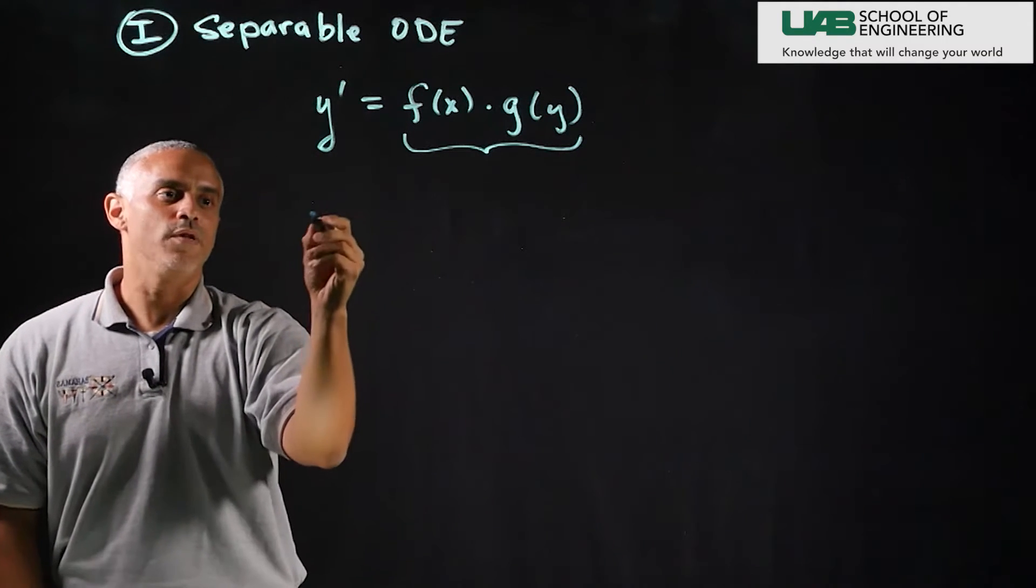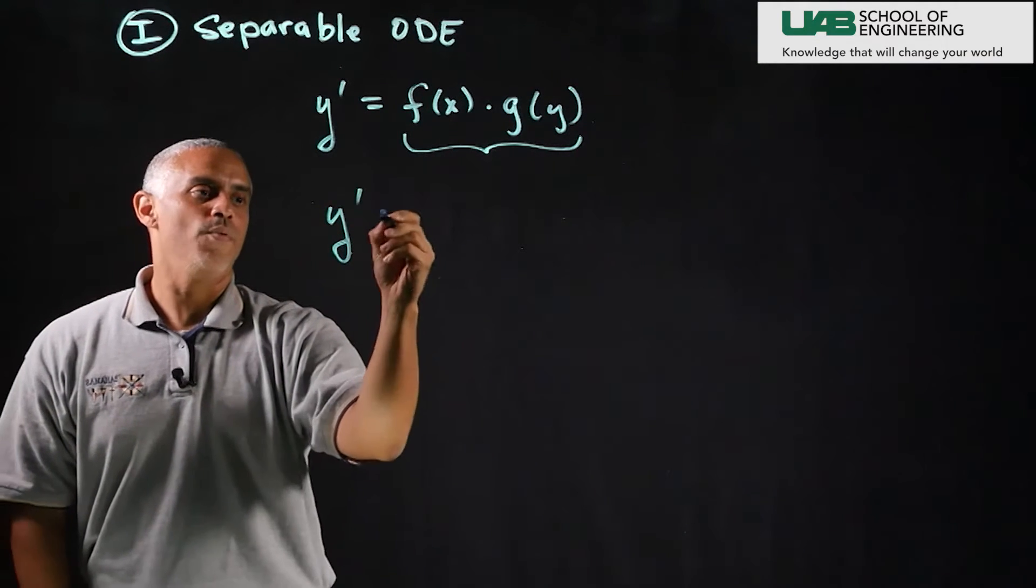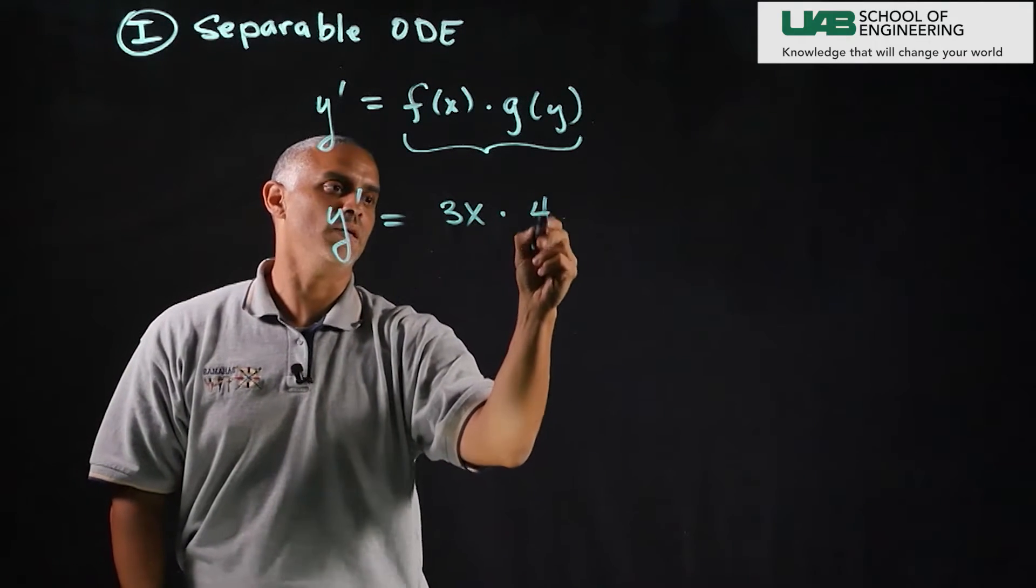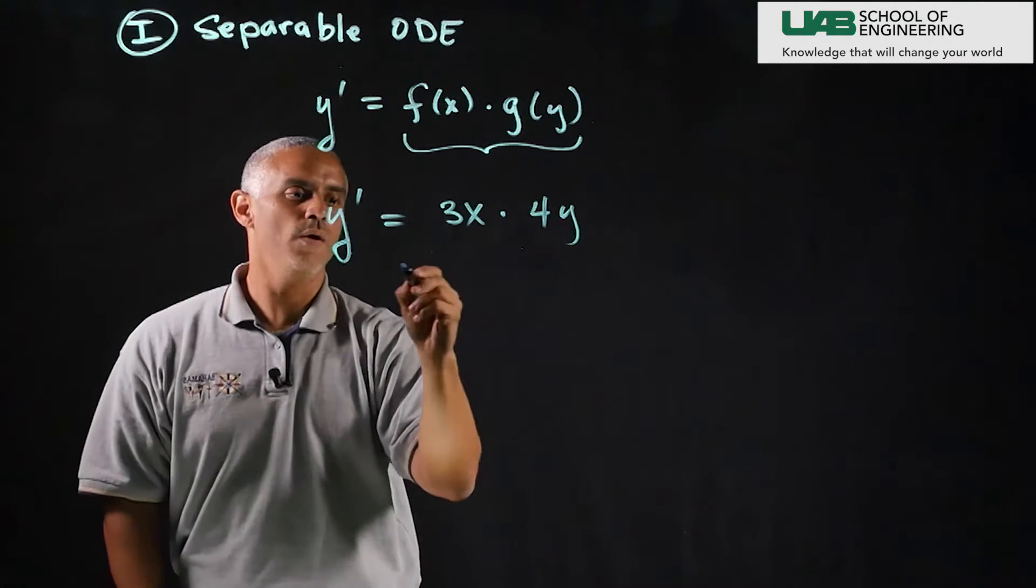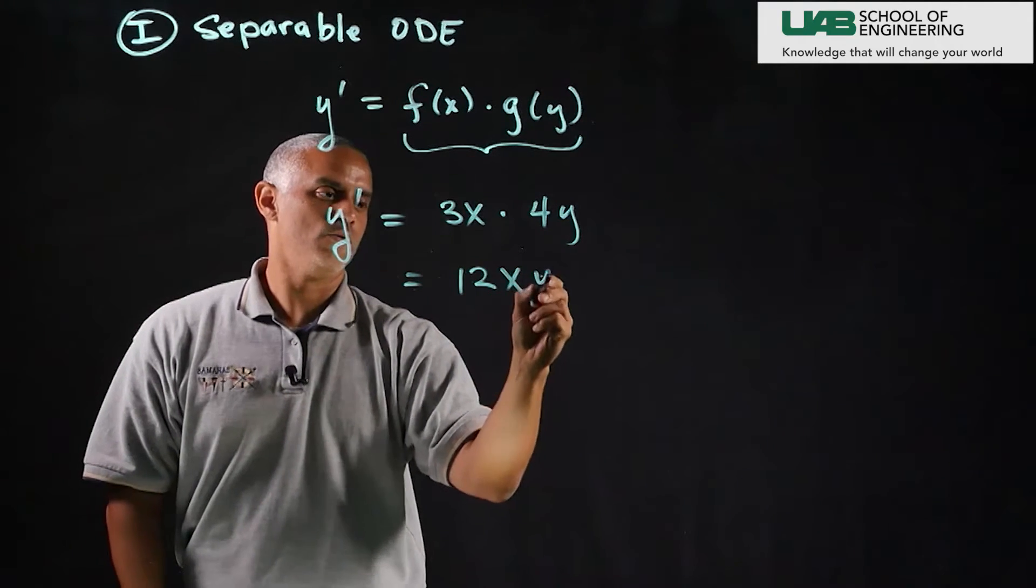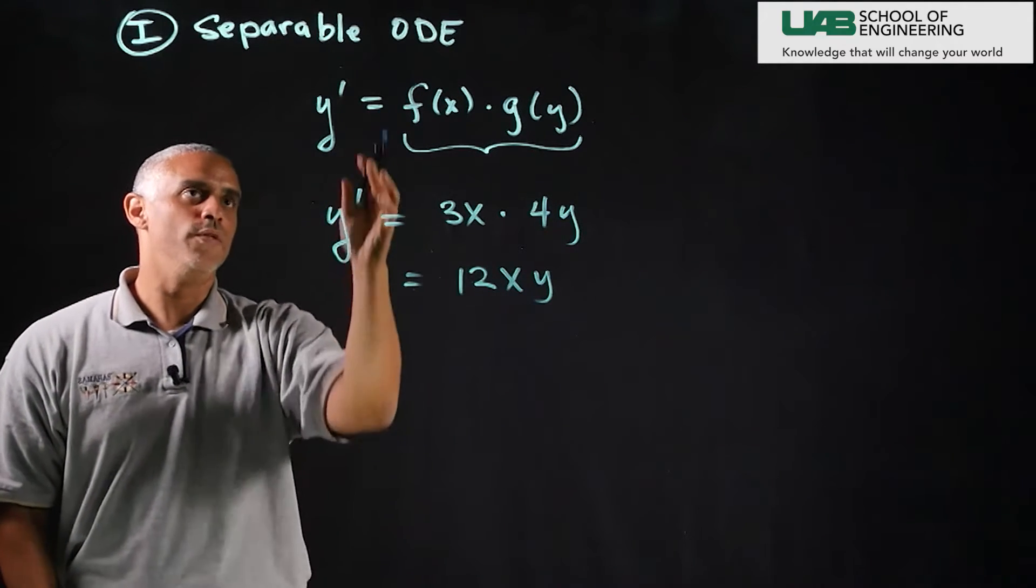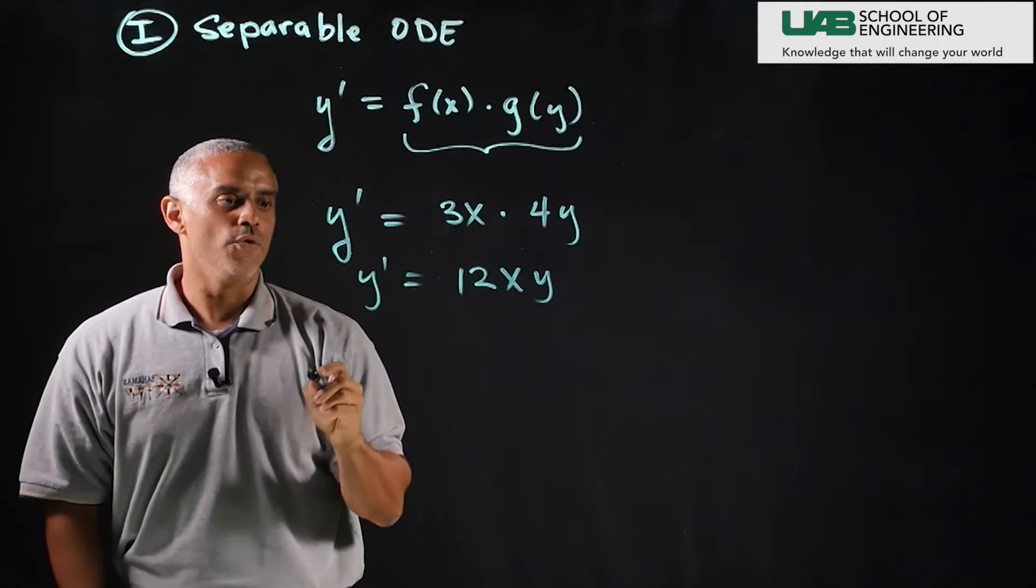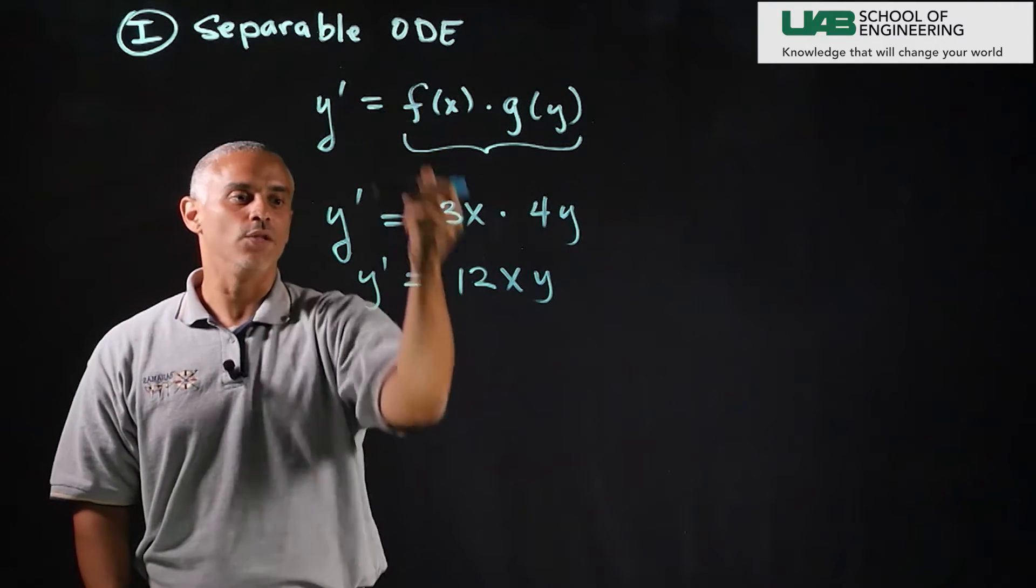So an example of this might look like y prime equals 3x times 4y or 12xy. Well this system is clearly separable and I'll go through the process that we learned in class to solve a separable ODE.